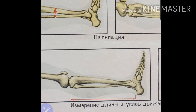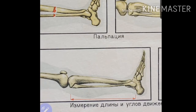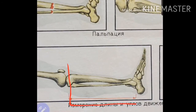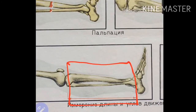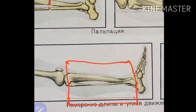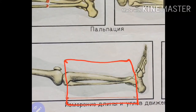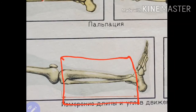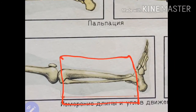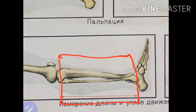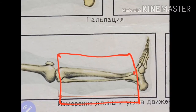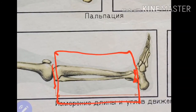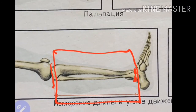In many cases the length of the segment is changed. To know this, you should check the length of the segment and compare it with the other side. To measure the length of the segment we have special bony points that are protruding under the skin. For the tibia, we should check it from the tip of the medial malleolus or the tip of the lateral malleolus to the gap of the knee joint between the tibial head and the femoral condyle.